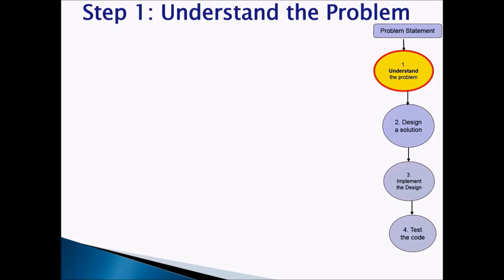Step 1: Understand the problem. Now you have seen my video example. What you have to do is choose characters and make them do some actions. Go to your notes — the first thing you need to do for step 1 is understand the problem. Write one or two sentences that describe what your program will do. Pause the video and write a short summary.